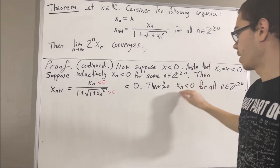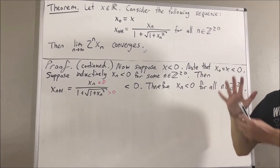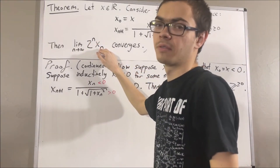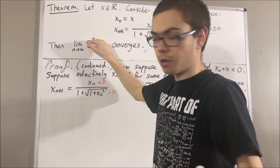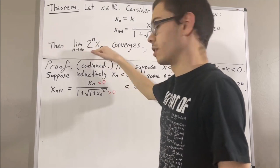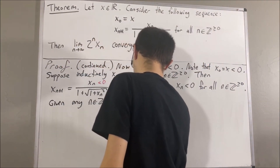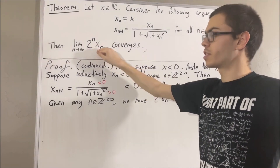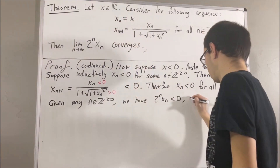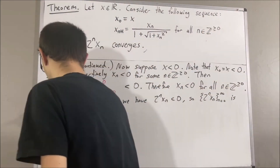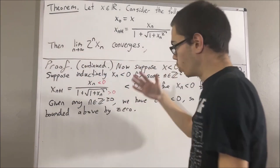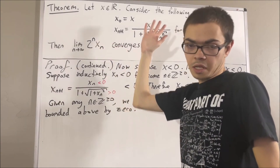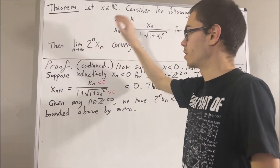Because xn is less than 0 for all n, given any n, we have that 2 to the n times xn must be less than 0, because 2 to the n is greater than 0 but xn is less than 0. Multiplying them together gives something less than 0. So all of the terms in this sequence are less than 0, meaning this sequence is bounded above by 0. If we can show that this sequence is an increasing sequence, then by the monotone convergence theorem, the sequence converges.